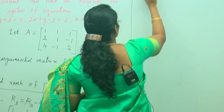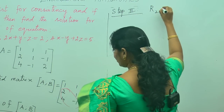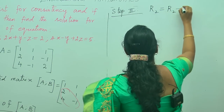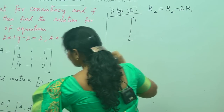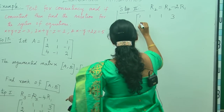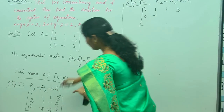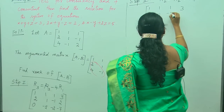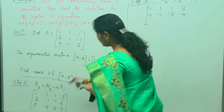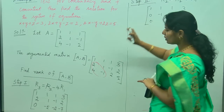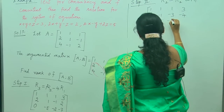Step 2: make the first element of the second row zero. Apply R2 = R2 minus 2R1. The first row stays as 1, 1, 1, 3. For row 2: 2 minus 2 gives 0, 1 minus 2 gives minus 1, minus 1 minus 2 gives minus 3, and 2 minus 6 gives minus 4. The third row stays as 0, minus 5, minus 2, minus 7. No changes are made to the first and third rows.